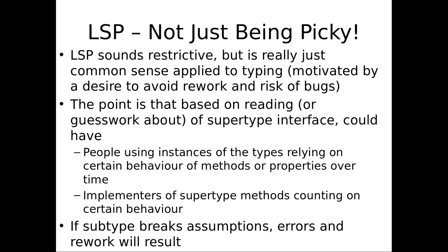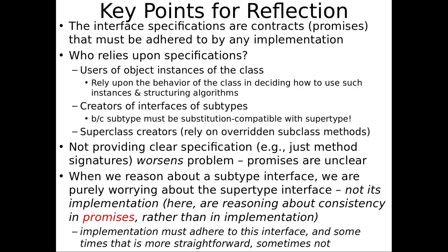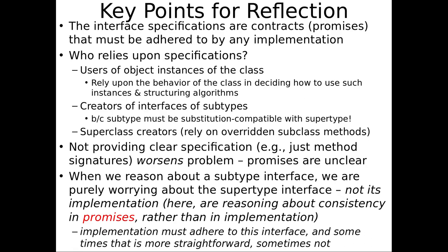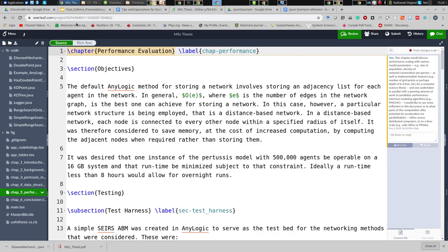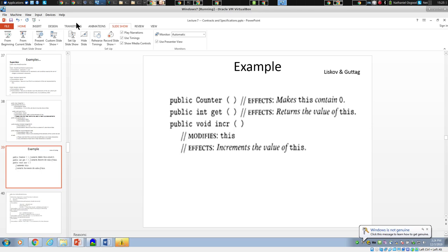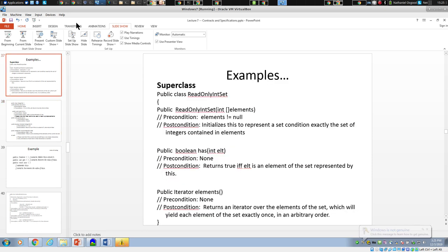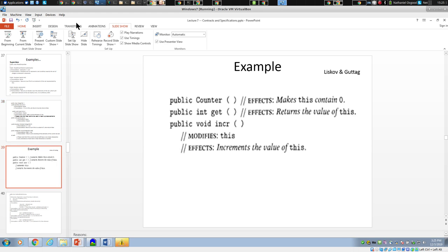If the subtypes violate things users could reasonably count on, you'll break their code — potentially a lot of code when creating or updating a subtype. Who relies on these specifications? Think about these interfaces — I showed you some interfaces here. Who relies on this interface? If I have a read-only set, an integer set, or a counter, I would argue there are two sets of individuals who rely on these things.